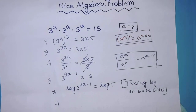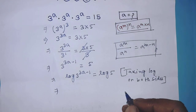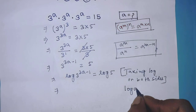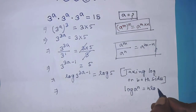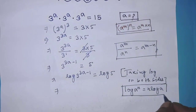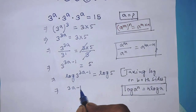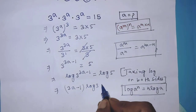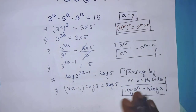To simplify this logarithmic form we apply the formula: log of a to the power n is equal to n times log of a. So according to this formula it will be: 3a minus 1 times log of 3 is equal to log of 5.